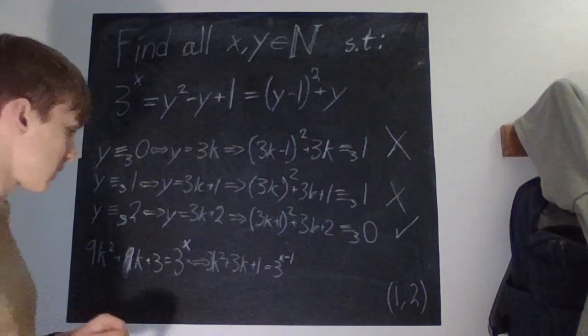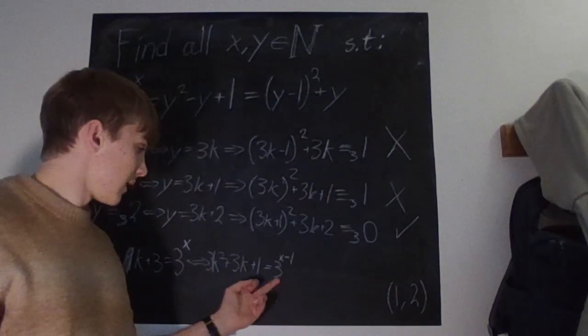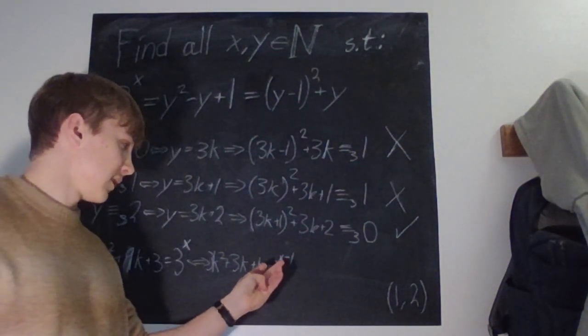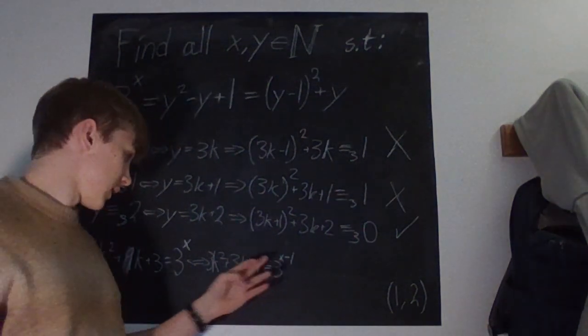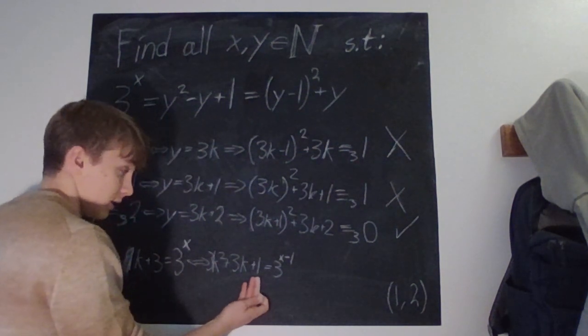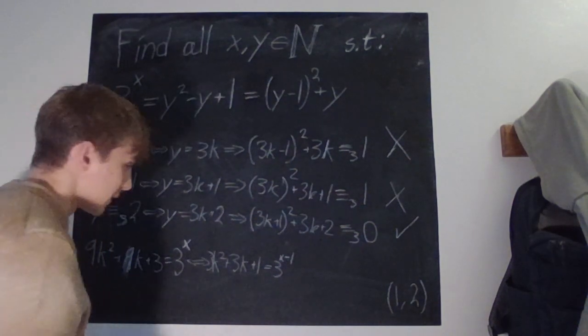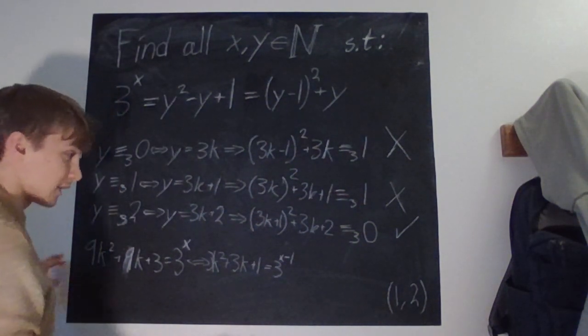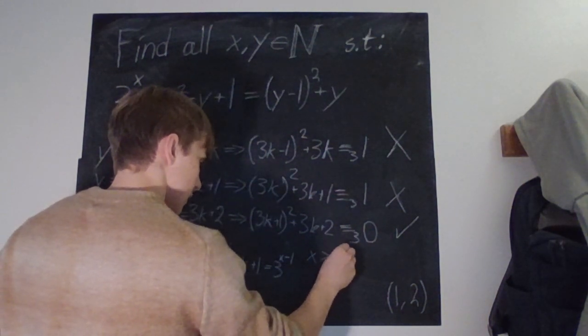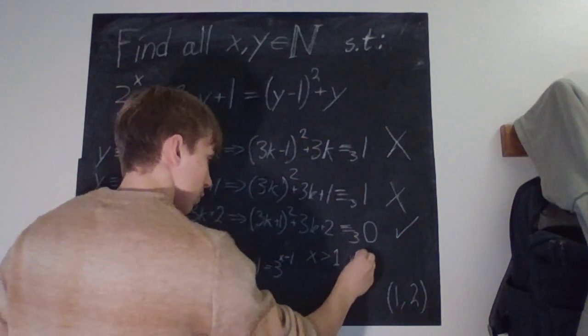So now what's the question? If this is divisible by 3, that means that x is 2 or bigger, then we have that this has to be divisible by 3, and this is for integer k's never divisible by 3. So we know that when x is bigger than 1, we have no solutions.